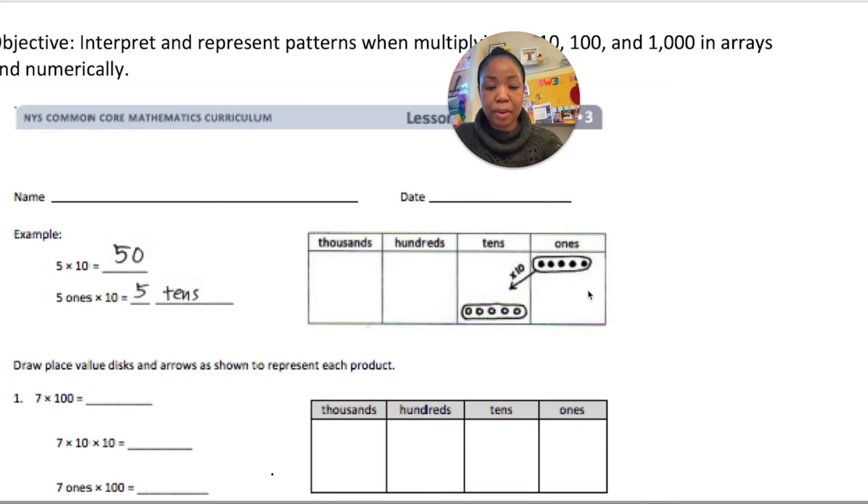So we can see here in the example that they have 5 ones, they drew an arrow, above the arrow they put times 10 because when you multiply times 10 it goes to the next unit. So they're showing you this 5 ones is now 5 tens because you multiplied it times 10.